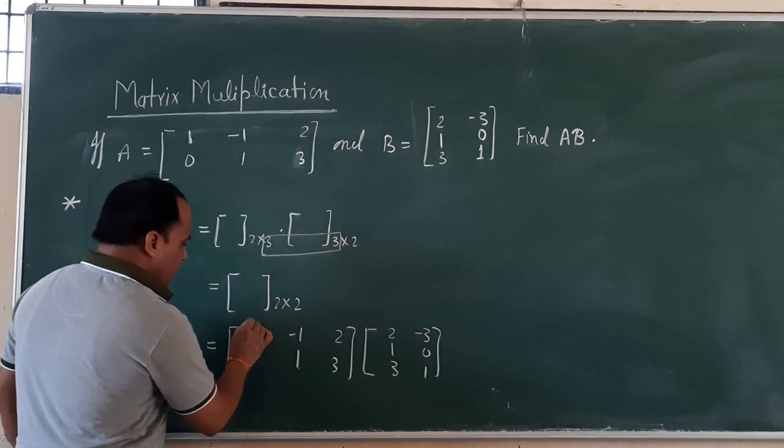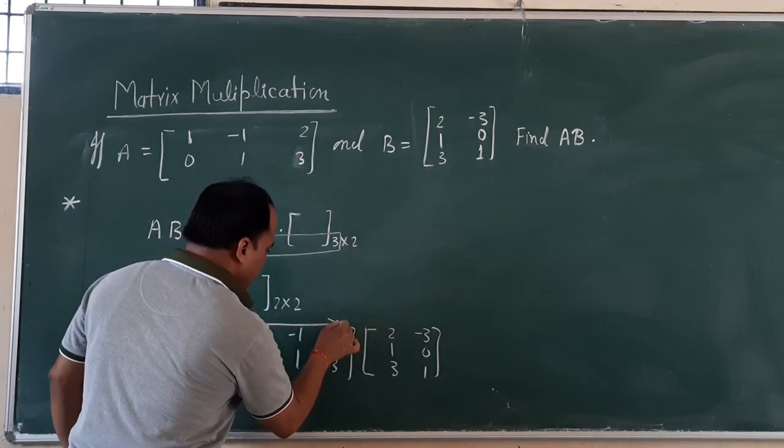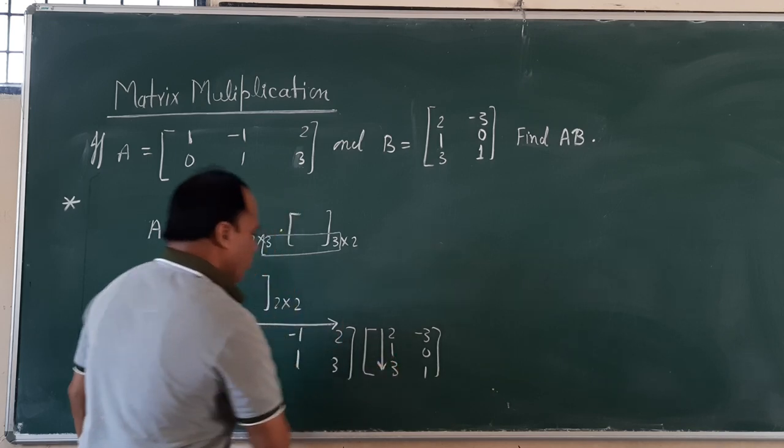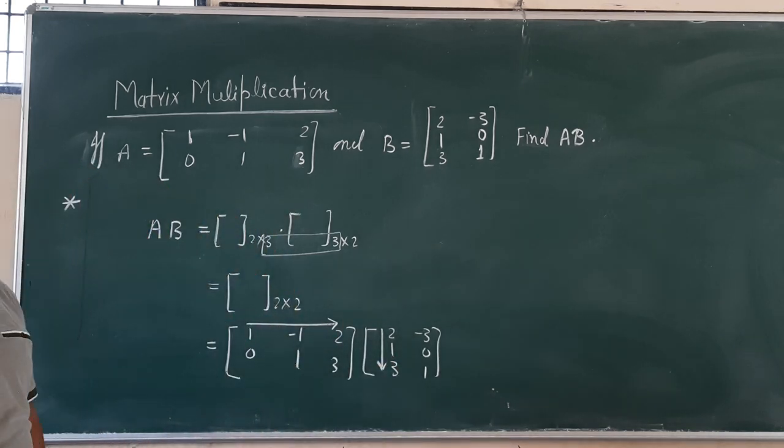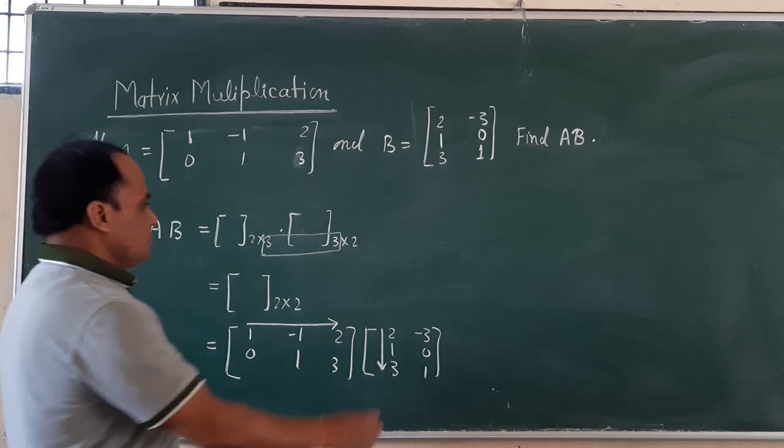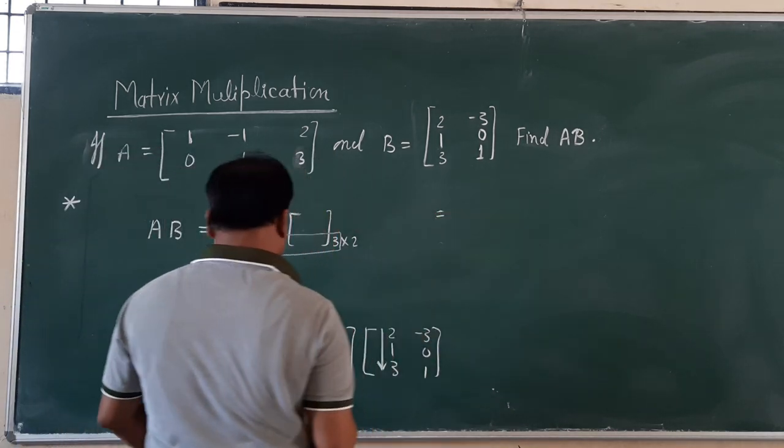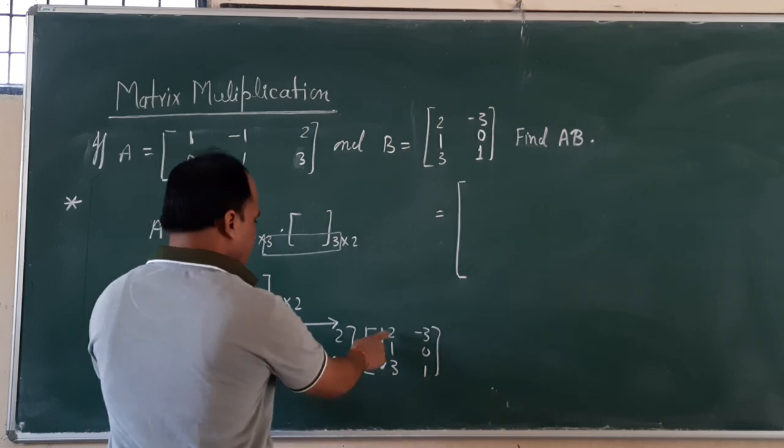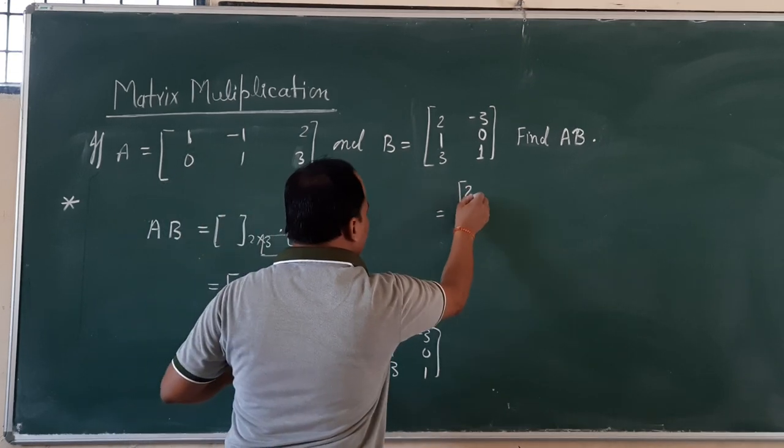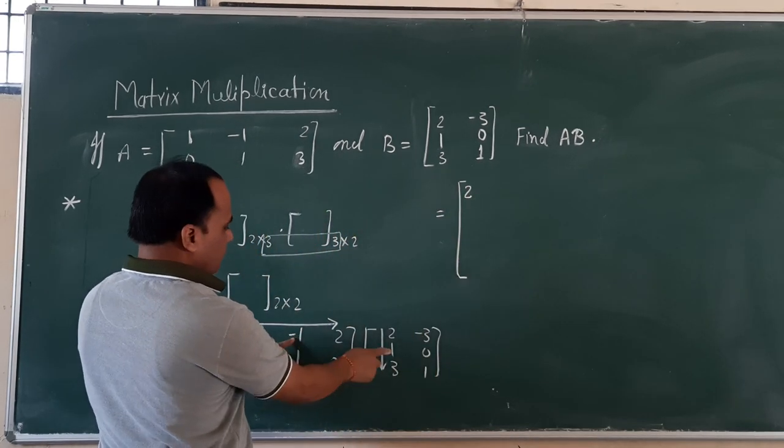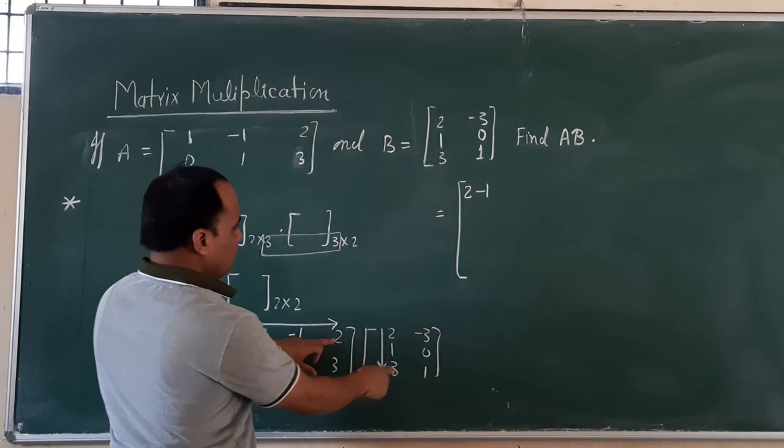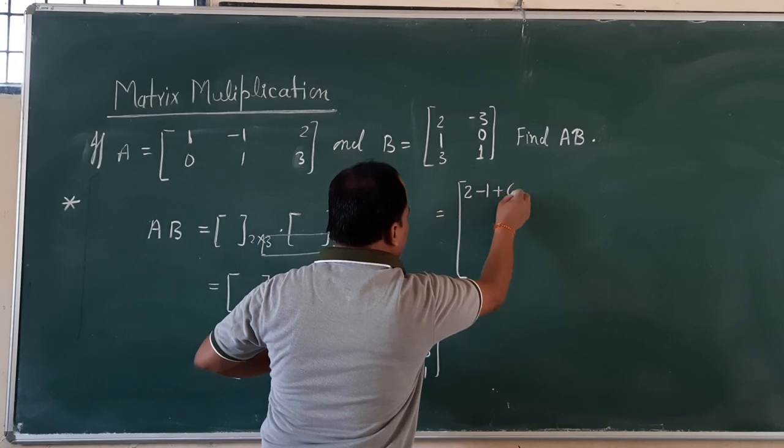We just take first row of first matrix and multiply with the first column of second matrix. This 1 is going to multiply with 2 gives you 2. This minus 1 multiplied with 1 gives you minus 1. This 2 is going to multiply with 3 gives you 6.